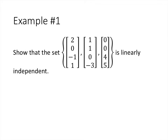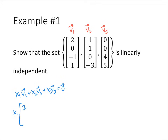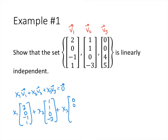So here's an example. We've got three vectors here, and we want to show that this set of vectors is linearly independent. We'll call our first vector v1, our second vector v2, and our third vector v3. The vector equation looks like x1v1 plus x2v2 plus x3v3 equals the 0 vector. So x1 times the vector (2, 0, -1, 1), plus x2 times the vector (1, 1, 0, -3), plus x3 times the vector (0, 0, 4, 5), set equal to the 0 vector.